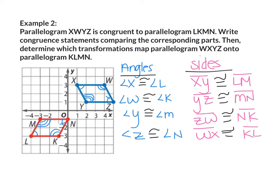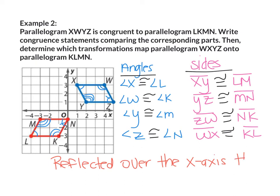The last thing we have to do is determine our transformation. We reflected over the X-axis, then translated left 5 units.